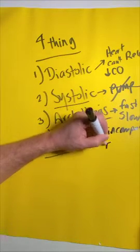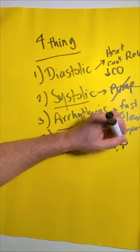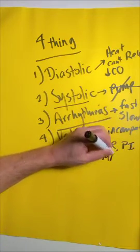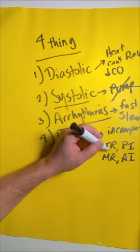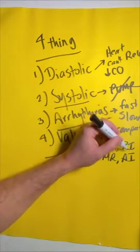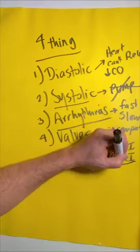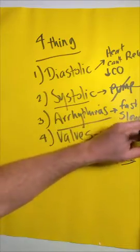That means things like tricuspid regurgitation, pulmonic insufficiency, mitral regurgitation, and aortic insufficiency. Any one of these is going to decrease the forward flow to the next chamber of the heart, or the aorta, thus decreasing cardiac output.